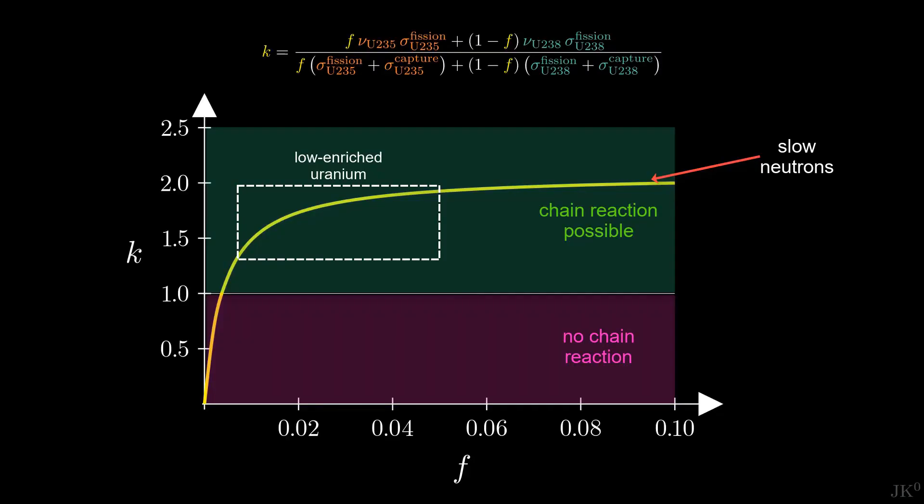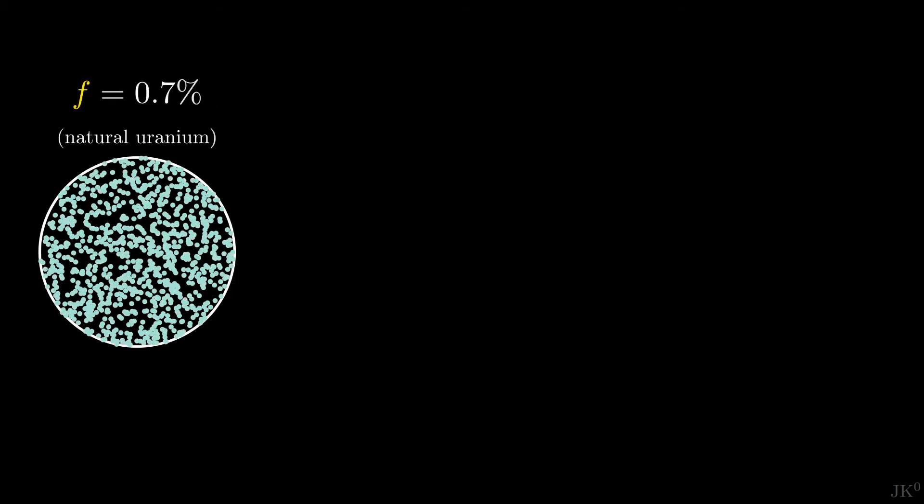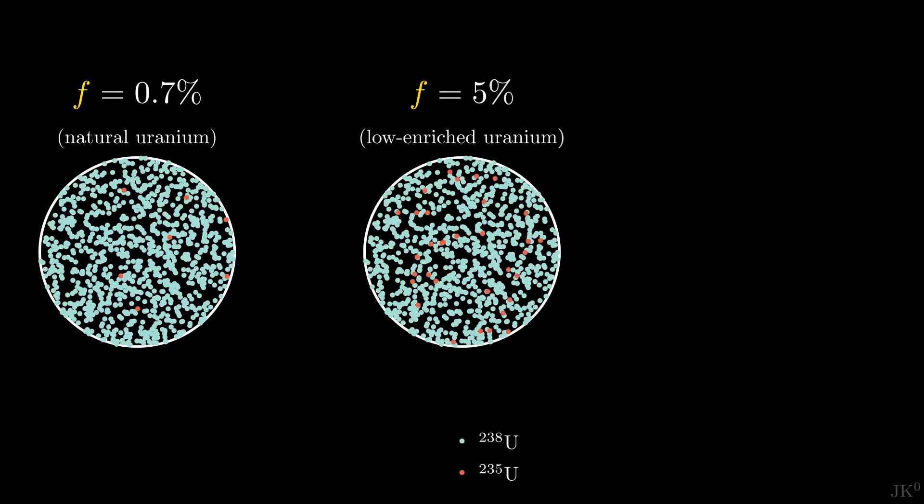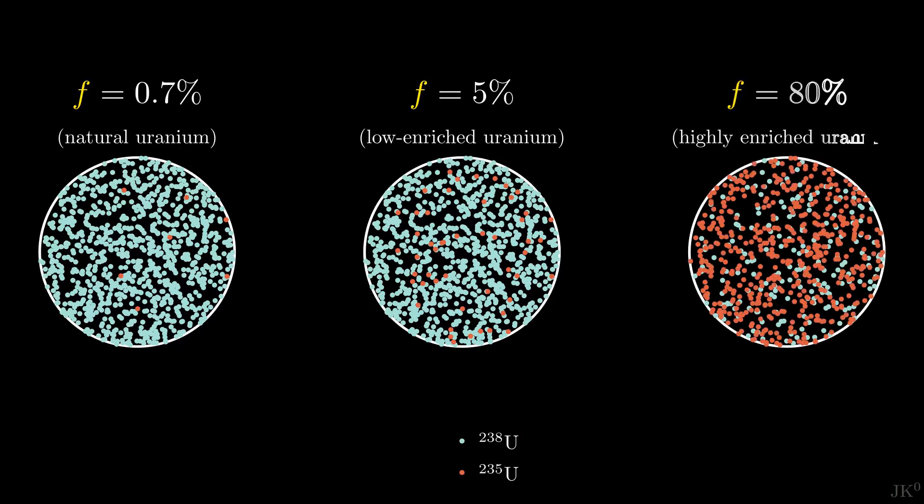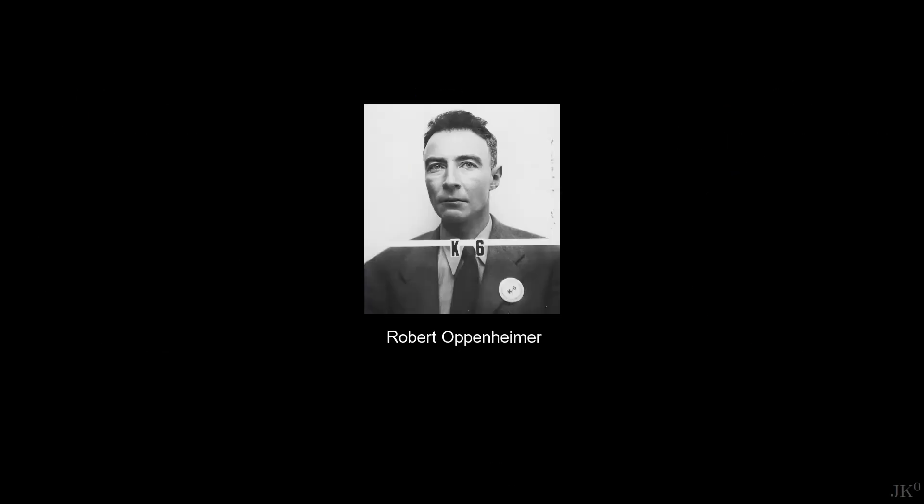We have just shown that a nuclear chain reaction with natural uranium is possible, so you might wonder, why not build a bomb with natural uranium and slow neutrons? This would avoid the need to enrich uranium saving millions of dollars and months of work, plus natural uranium is quite abundant.